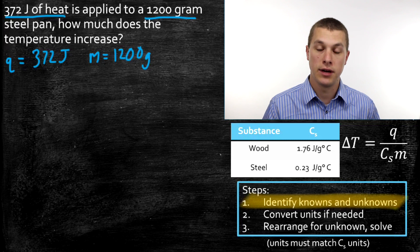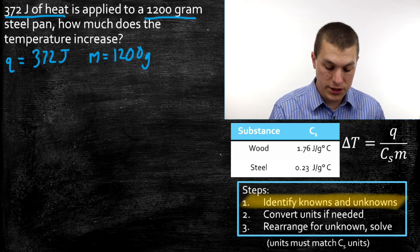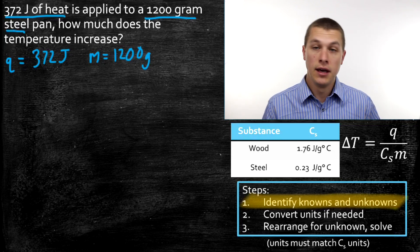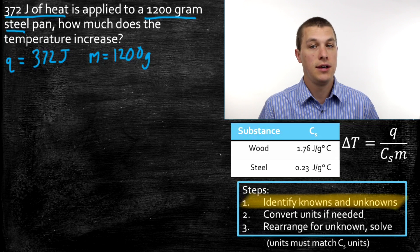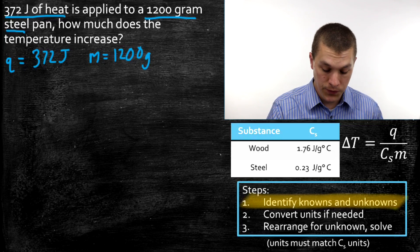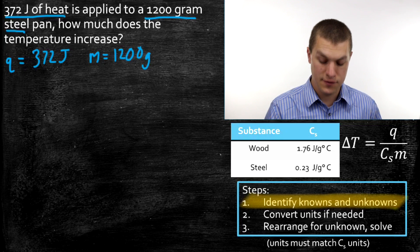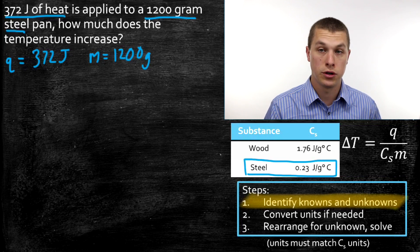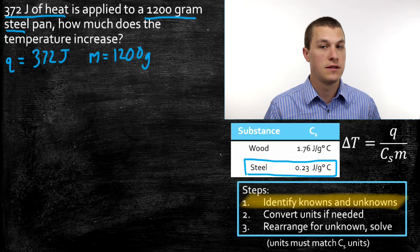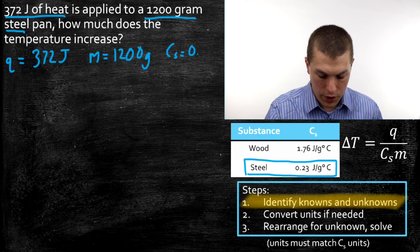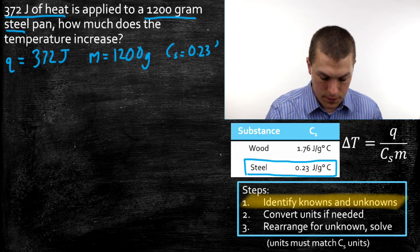We're also told it's made of steel, which is really important because that tells us the heat capacity. You often have to look up the heat capacity in a table — maybe in the back of your book or on a list of tables during a test. We go to our table and look at steel, and we see its heat capacity is 0.23 joules per gram degree Celsius. So heat capacity is something we look up; it's not usually given to you in the problem. So Cs equals 0.23 joules per gram Celsius.